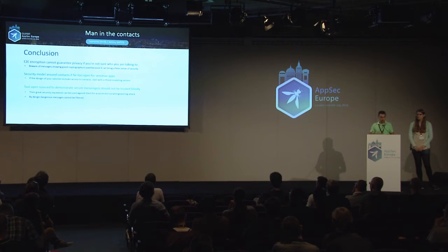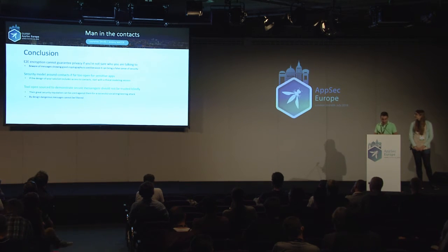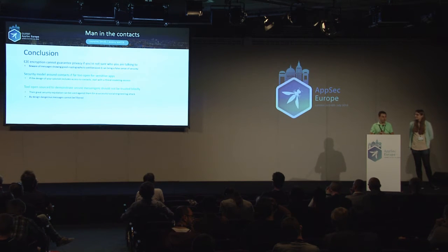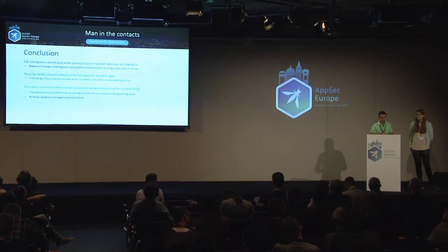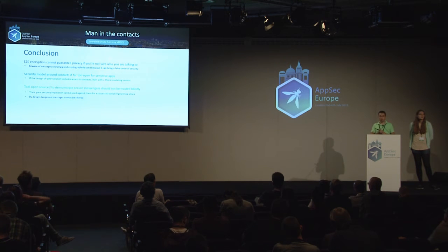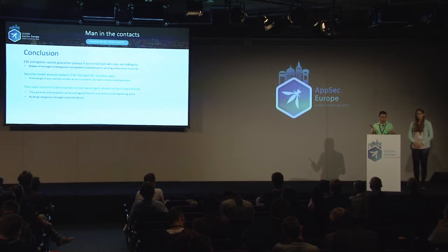End-to-end encryption is really good, but it cannot guarantee privacy if you're not sure who you're talking to. There is excellent crypto behind it, but it can be worrying from a security point of view because people feel totally safe and that's not the case. You can't have this super good crypto if you don't do the key provisioning properly. It's written in the formal mathematical description as an assumption, and it's a bit awkward that we push this code saying it's super secure when we haven't yet figured out an out-of-band channel that enables secure key exchange.